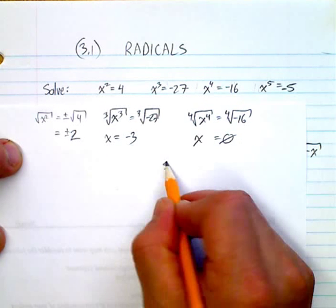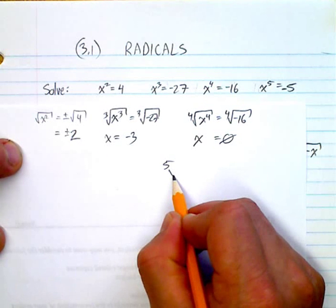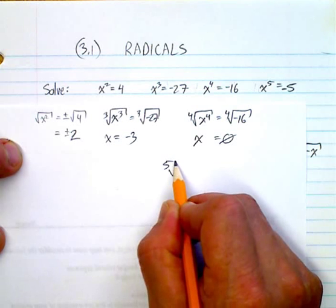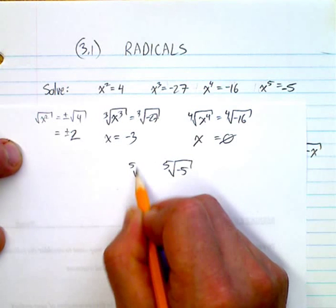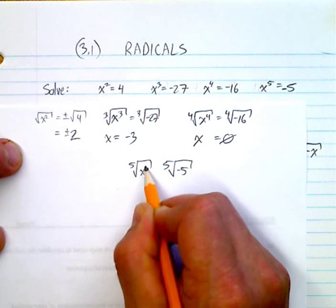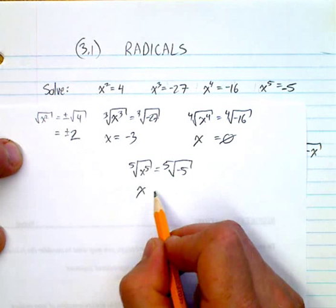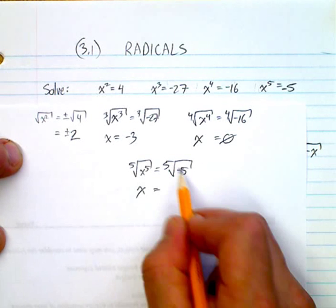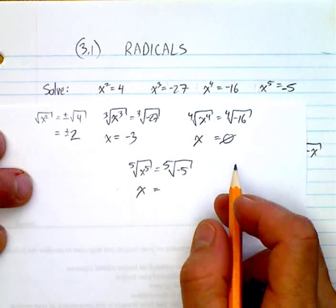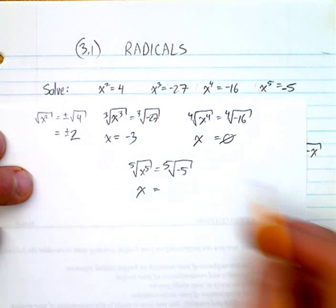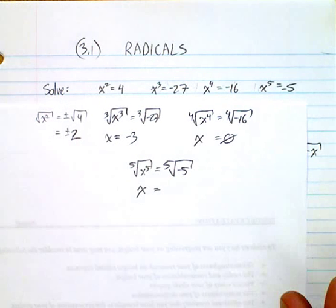Now the last one: the fifth root of negative 5. I'd have to take the fifth root of x to the power of 5, which gives me x. I can indeed take the fifth root of negative 5 — it's just the fifth root of negative 5, and you can leave the answer like that.